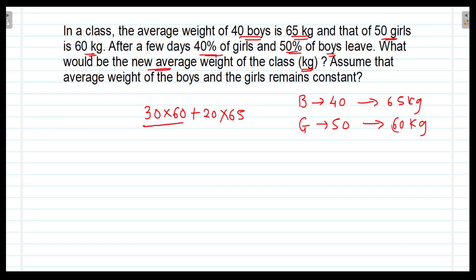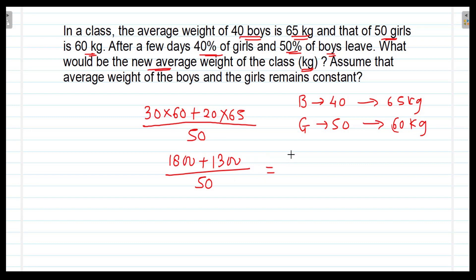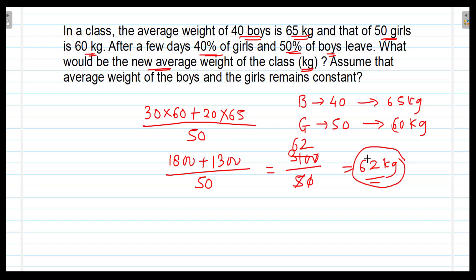Since the total boys and girls are 50, dividing by 50 gives the new average weight of the class. 60 times 30 is 1800, plus 65 into 20 which is 1300, divided by 50. Adding these two gives 3100 divided by 50. Cancelling the zero, we get 310 divided by 5, which equals 62 kg. Therefore, the new average weight of the class is 62 kg.